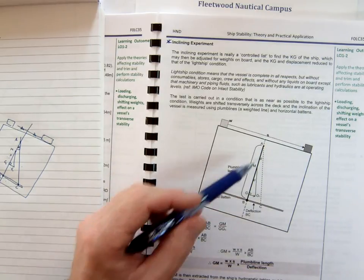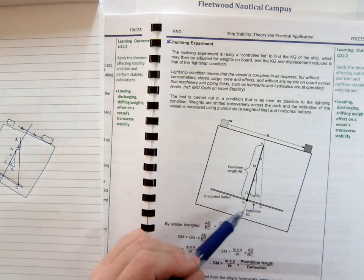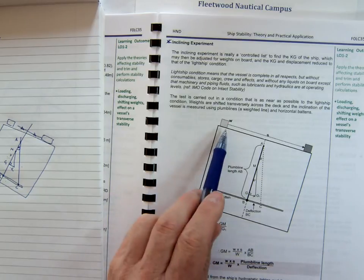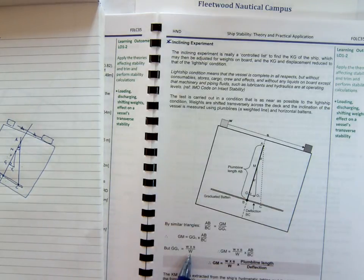So A over B—in other words, plumb line length over deflection—has got to equal gm over g to g1. We've talked about gg1 as being the weight times the shift, or the distance it's covered, over the total weight of the vessel. So gm has got to be that weight times the shift over the weight of the vessel, multiplied by plumb line length over deflection.